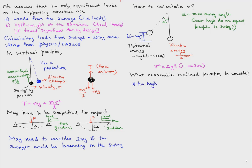What is the reasonable inclined position to consider? If the inclined position is too high, then the centrifugal force is too small. So there's really nothing pulling at the swing.